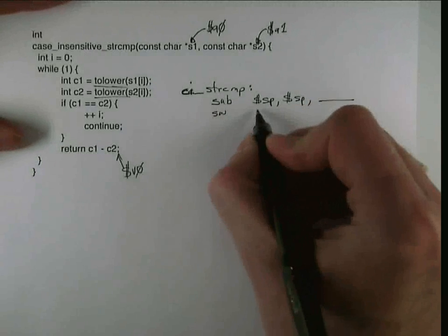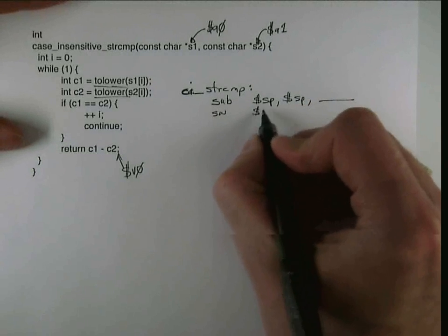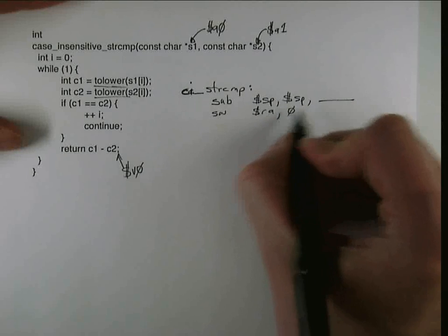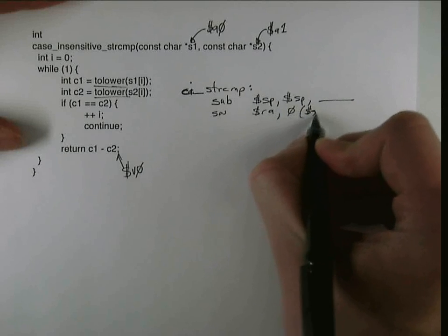I know right away there's at least one thing that I'm going to need to save to the stack and that's the return address. And so I'm going to go ahead and save that right away.